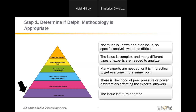Delphi is also helpful if there's a likelihood of peer pressure or power differentials affecting the experts' answers. If someone in the room has a lot of power and they're saying something, it's difficult to disagree with them. And then the last situation where Delphi is great is when the issue is future-oriented. We can't empirically measure or count the future, so Delphi can help us with this informed judgment to make educated guesses. If it's a future-oriented issue, Delphi is a great methodology to use.